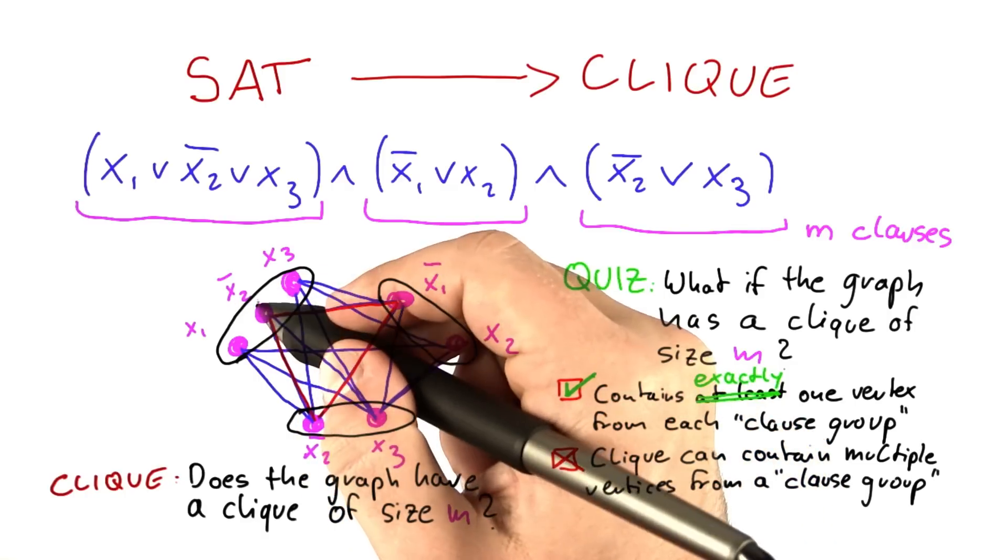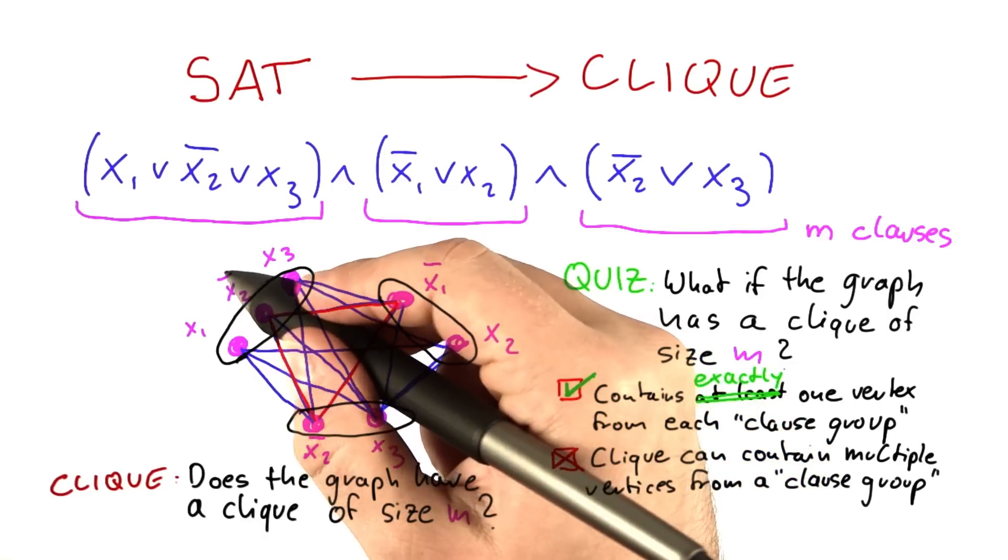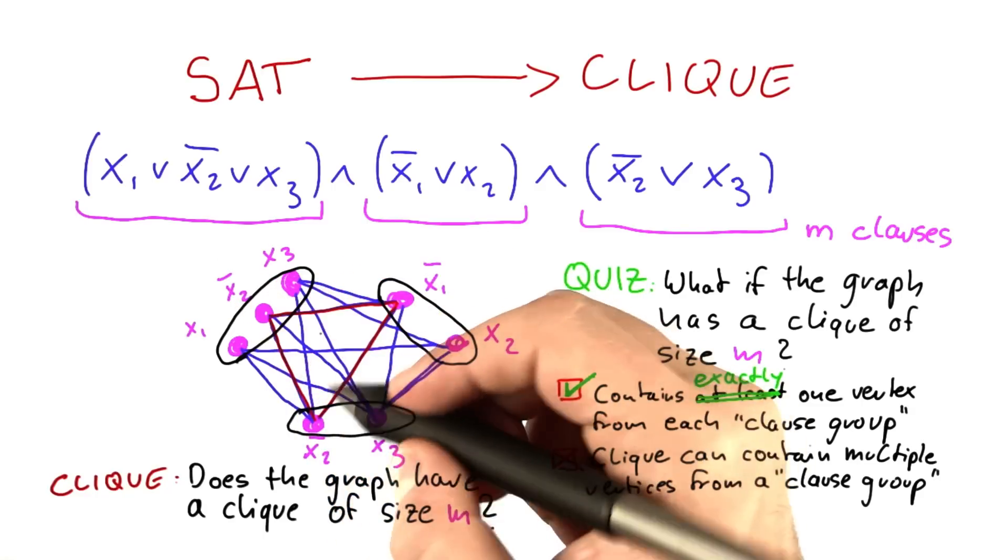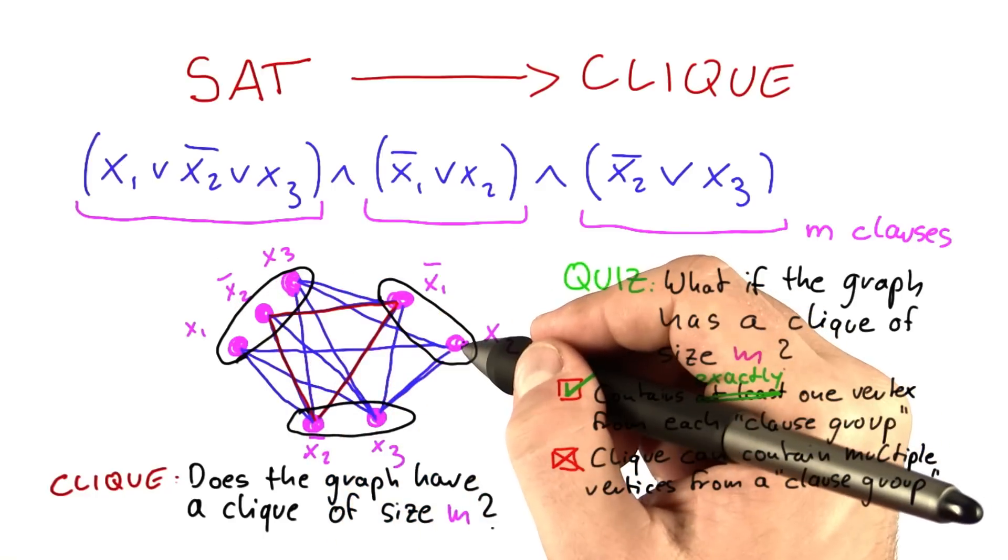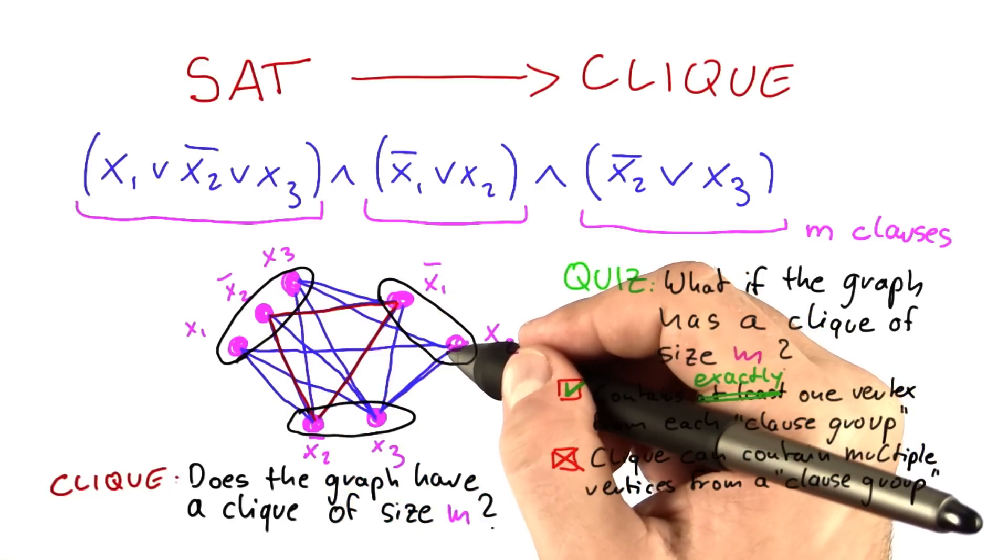So what we cannot have in this graph, for example, is one vertex that represents not x2 and another vertex that represents x2, because we avoided this in the construction.